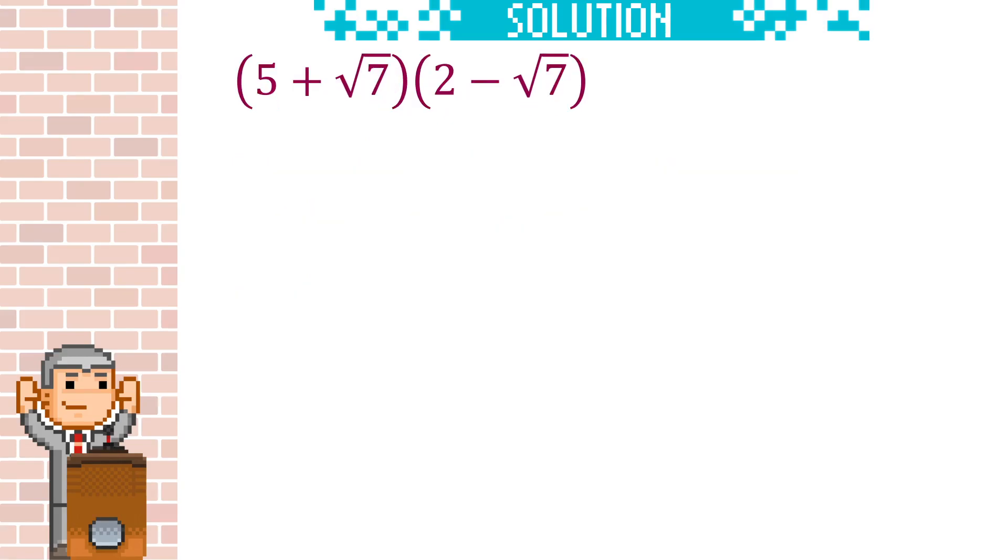With this question, we can use the same rules we use to expand algebraic quadratics to help us. So we're going to multiply everything in the second bracket by everything in the first bracket. But if you look at the last term, we've got root 7 times root 7.